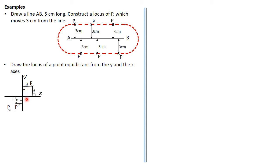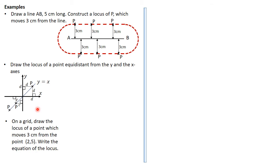That tells us P is a set of points along a line where the x and y values are the same — like (2,2), (3,3), (4,4), and so on. The locus of point P is the straight line that bisects the angle between the x and y axes, and the equation of that line is y = x. So when x is 2, y is 2; when x is 10, y is 10; when x is negative 3, y is negative 3.